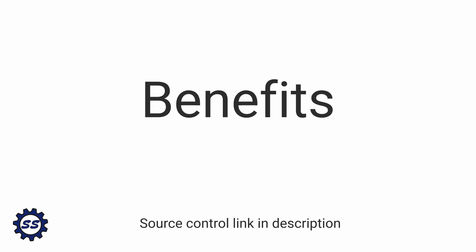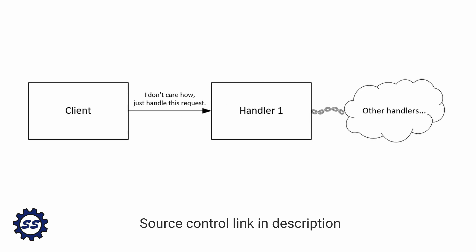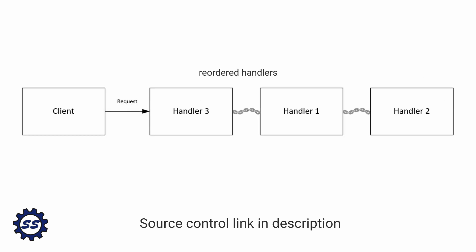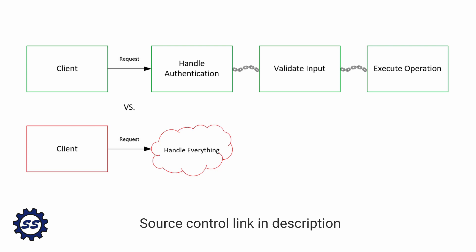There are also some clear benefits to the pattern. For example, the client is completely decoupled from the chain of handlers. All the client needs is the initial handler in order to pass the request into. At that point, it doesn't care what happens in that chain of handlers — all it's concerned about is whether its request is going to get handled. That also means we can change our chain of handlers however we wish: add new handlers, remove handlers, or even change the order.